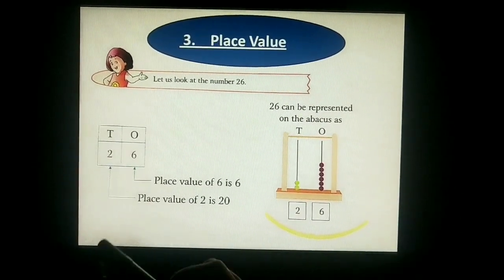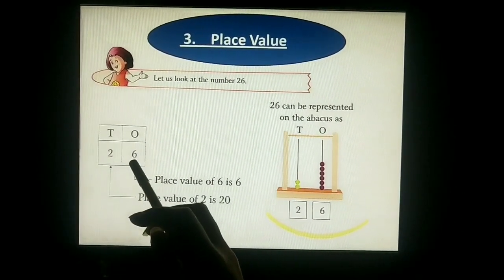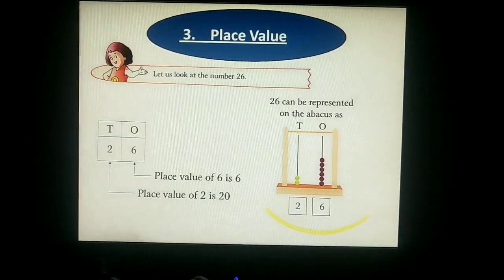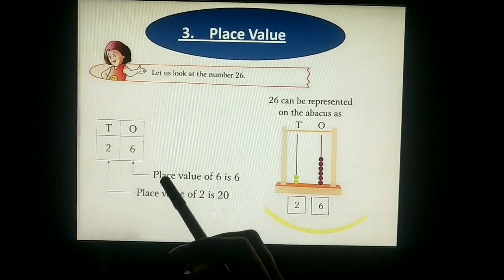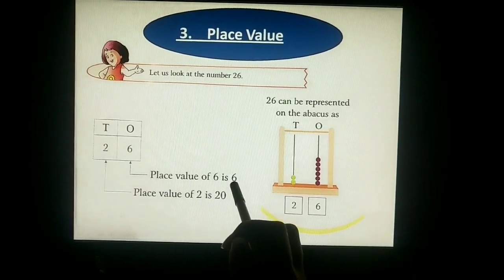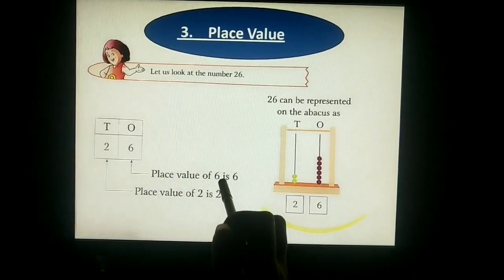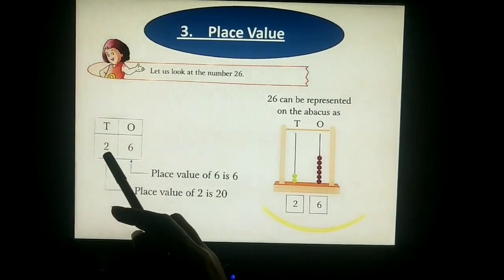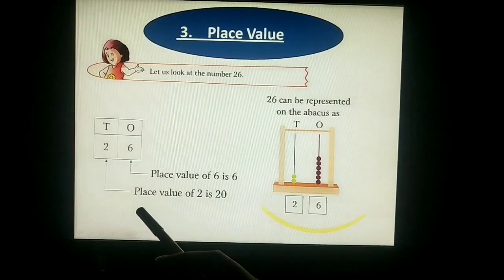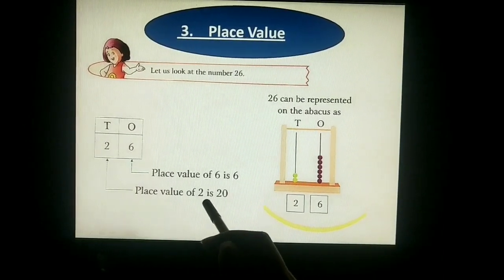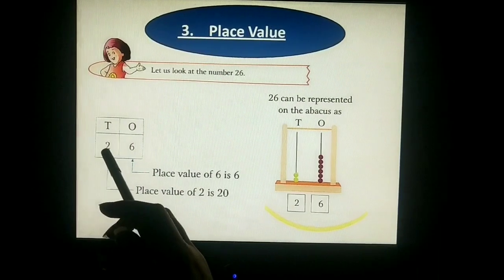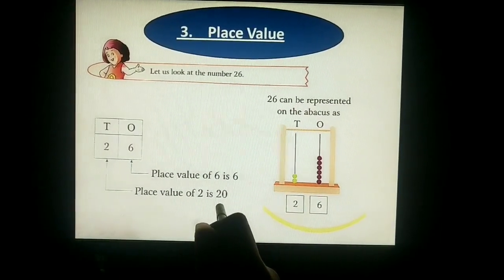So place value: ones place — the number is 6, so place value of 6 is 6 — they are the same number. Tens place — we multiply the number by 10. So place value of 2 is 20 — 2 multiplied by 10 is equal to 20.